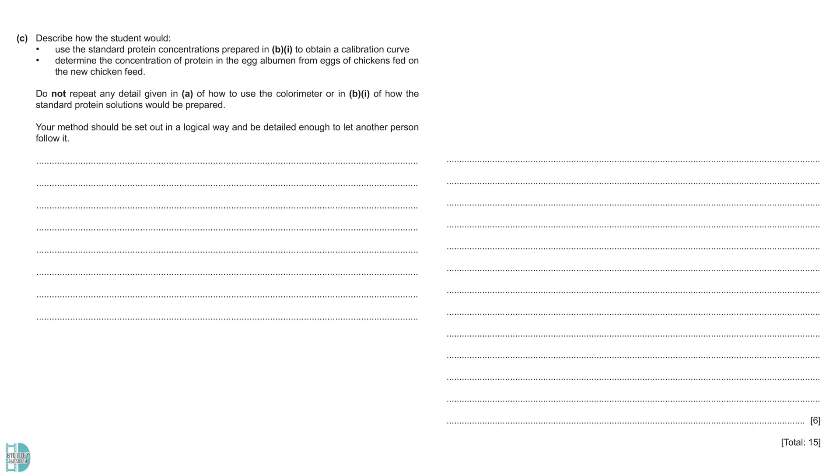In question C, we have to describe how the student would use the standard protein concentrations prepared in B1 to obtain a calibration curve and determine the concentration of protein in the egg albumin from the egg sample. In an experiment design question, you need to include these 6 components. The best thing to do is, list down all the points you want to include, then arrange them in sequence in your answer.